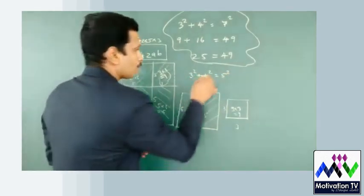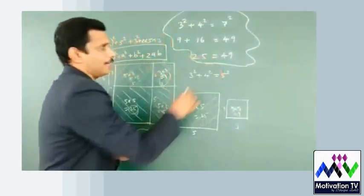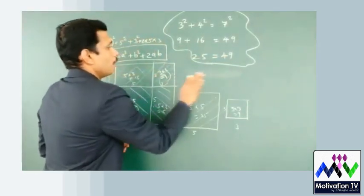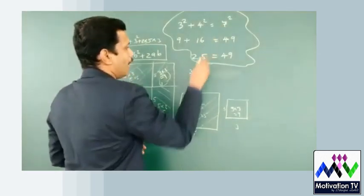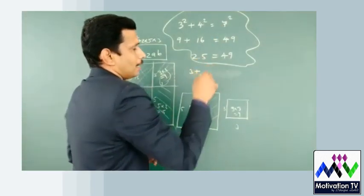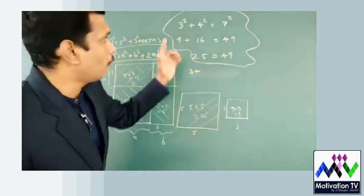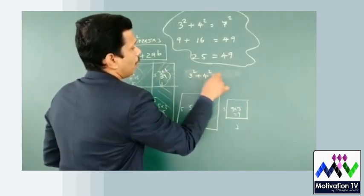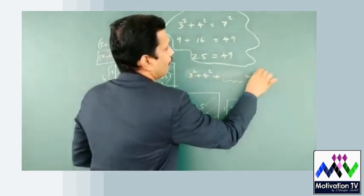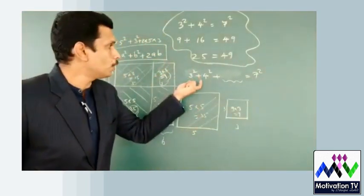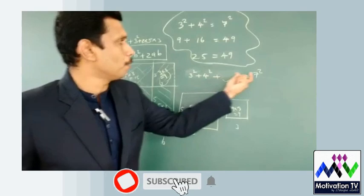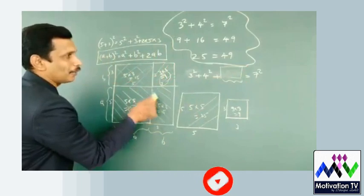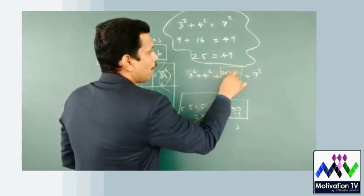5 squared is not equal to 25 and 49. What do we call this? 3 plus 5 equals 7 squared. 3 squared plus 4 squared equals 7 squared. 3 squared plus 4 squared equals 49. What do we call this? 2 squared plus 3 squared equals 4 squared.